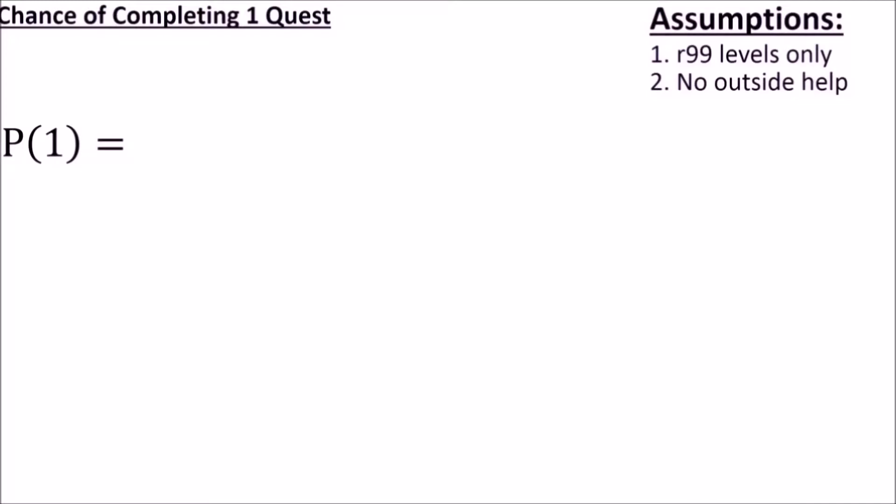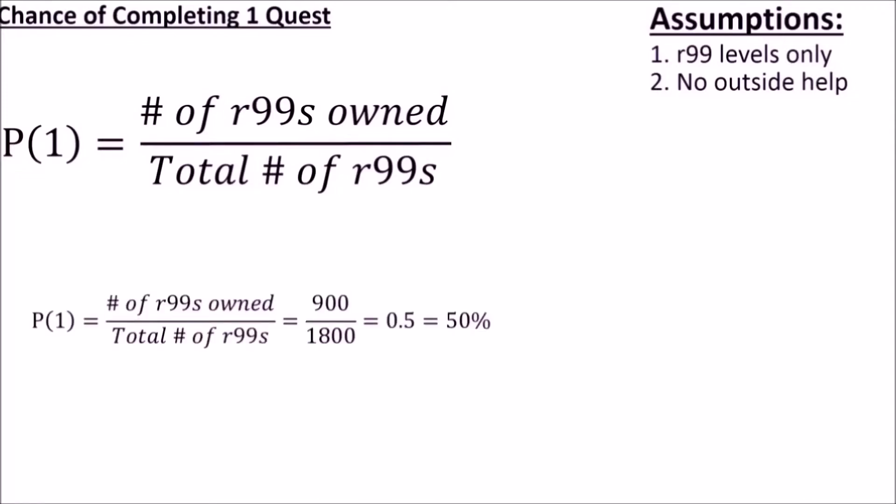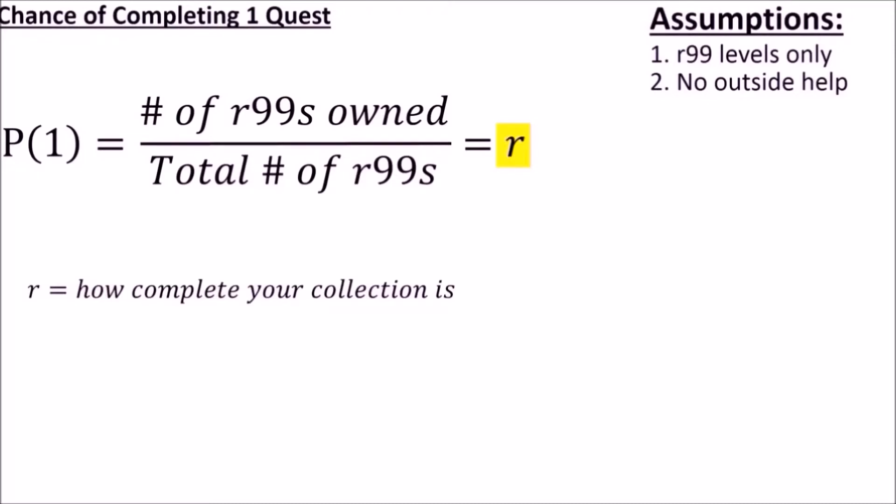We'll start with the probability of completing a single quest. Given the entire pool of rarity 99s, we need the fairy to pick an item that we own, so the chances of completing a single quest is just the ratio of rarity 99s owned to the total number of rarity 99s. Notice that this fraction also represents the completeness of your collection. So if your collection is 50% complete, then you have a 50% chance of completing a single quest. We'll call this ratio r, and it will show up in every formula from here on out. r represents how complete your collection is, and it represents your chances of completing a single quest.